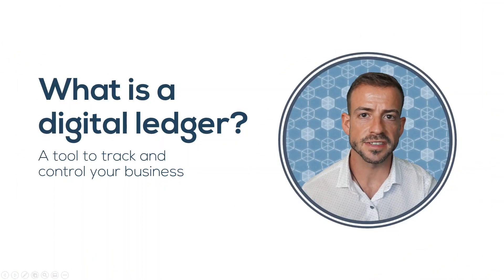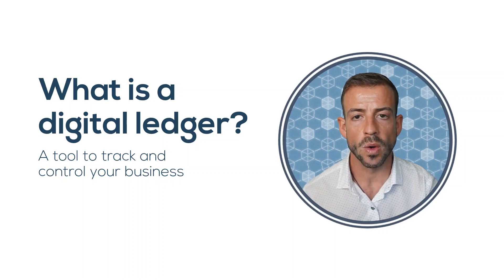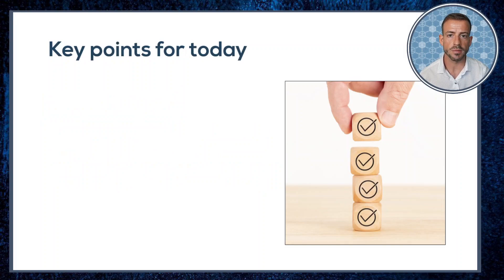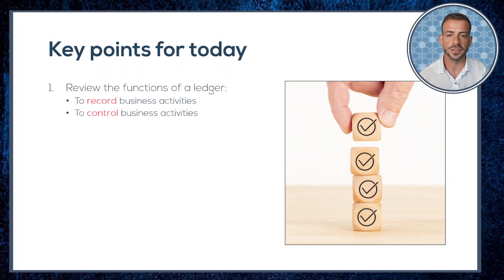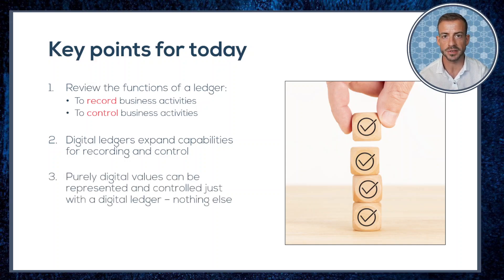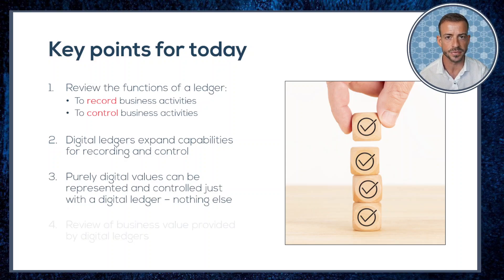Hi everyone. I said last time that blockchains are decentralized digital ledgers. So let's start building that up by asking, what is a digital ledger? This is the first of the lectures in this introductory blockchain 101 chapter. The key points we'll cover today are a review of the functions of a ledger, which are to record business activities and to control them. We'll look at how digital ledgers expand the capabilities of recording and control, and we'll understand how purely digital values can be represented and controlled only using a digital ledger and nothing else. Finally, we'll review the business value provided by these ledgers.